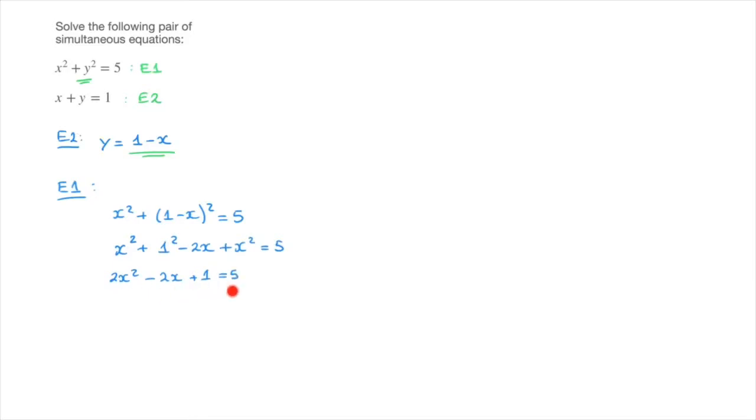I now want to make sure I gather all the terms on the same side of the equation. And for that, I'm going to subtract 5 from the right-hand side. And since I'm doing that on the right-hand side, I have to do it on the left-hand side as well. So this becomes 2x squared minus 2x minus 4 equals 0. And at this stage, we have a quadratic equation to solve, and we know how to do that.